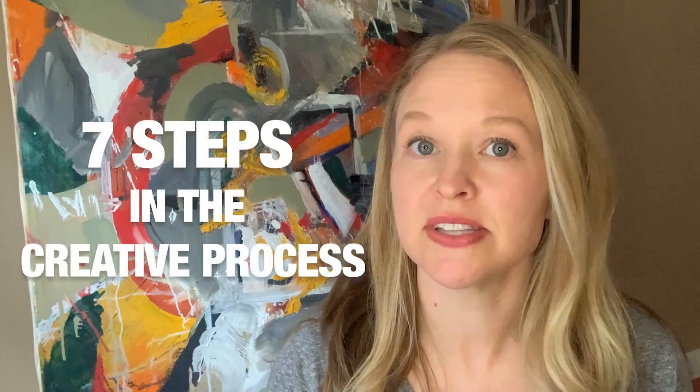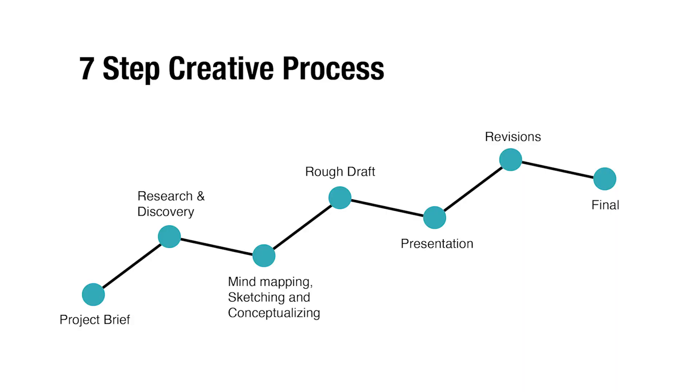In this video, I'm going to break down seven steps in the creative process. Great design does not just happen — you have to follow a process and do lots of research to get to the best solution possible. The seven steps I'll walk through today are: project brief, research and discovery, mind mapping, sketching and conceptualizing, rough draft, presentation, revisions, and the final. You can use this creative process anytime you have a creative project — it does not apply only to graphic design.